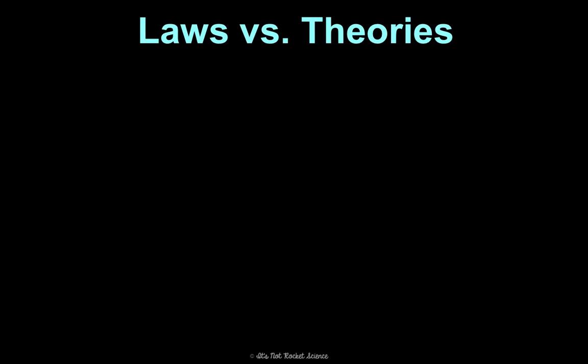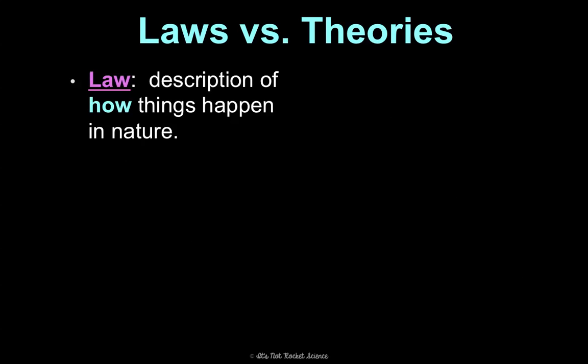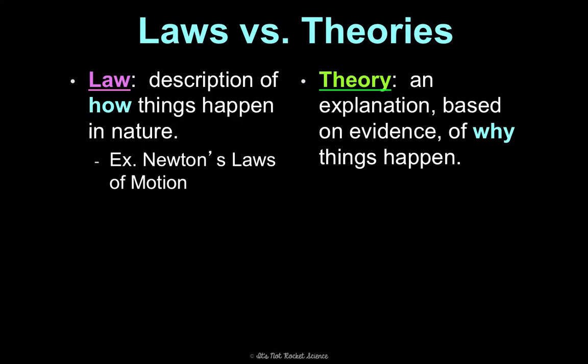All right, two other things we need to be able to distinguish between are laws and theories. These are different from our English definition of these words. So a law is a description of how things happen in nature. That key word there is how, and I remember because they both end in W. An example is Newton's laws of motion. They describe how matter moves. That's pretty much what they do. Whereas a theory is an explanation based on evidence of why things happen. It's not just a guess. It's based on evidence that scientists have found.